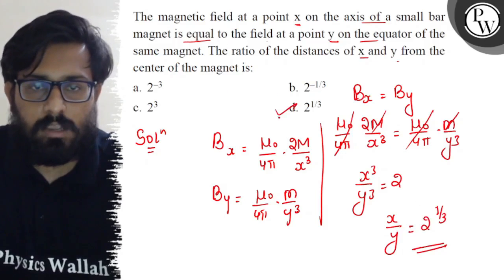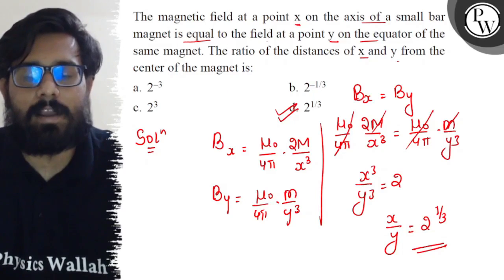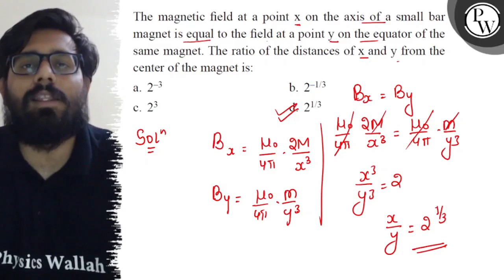So the ratio of x and y comes out to be 2^(1/3) which we will find in option D. So option D is absolutely correct and I hope you got the concept of this question. All the very best!